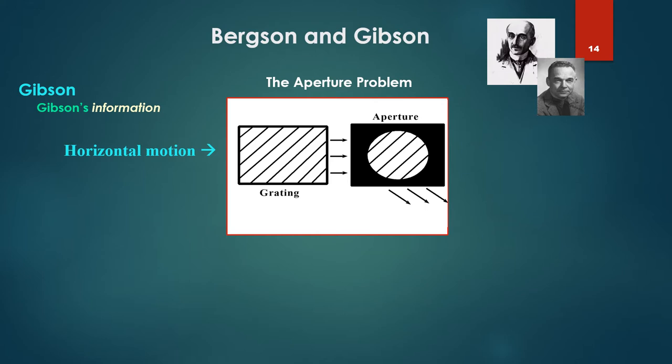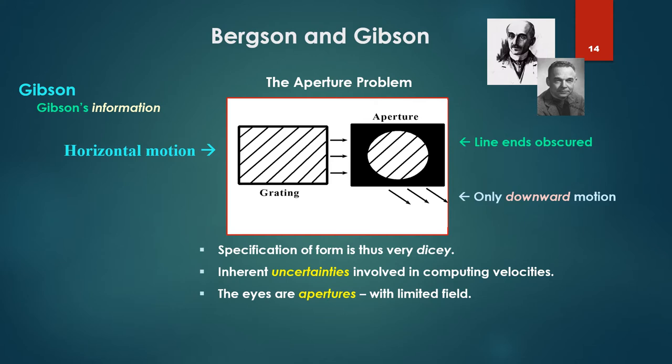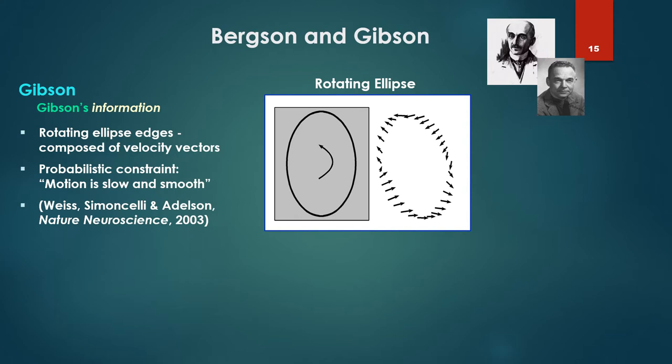Now there's a problem here, and it's called the aperture problem. These flow fields are specifying form. Note, the grating moving to the right there, then it moves under the aperture. Once it moves under that, the line ends are obscured. All we would see is downward information, only the downward motion. Remembering the aperture is essentially what the eye is. So specification of form via these velocity fields is thus very dicey. There's inherent uncertainties involved in computing the velocities of these lines, of these velocity vectors. Again, the eyes are apertures with limited field.